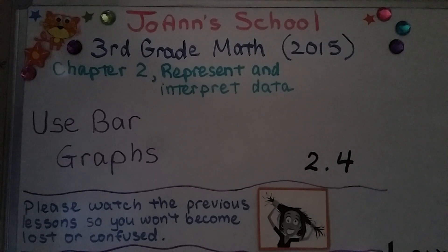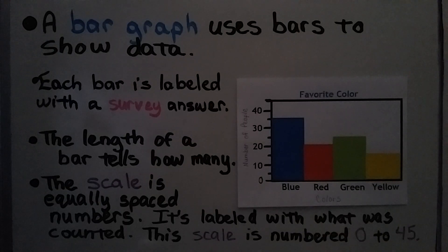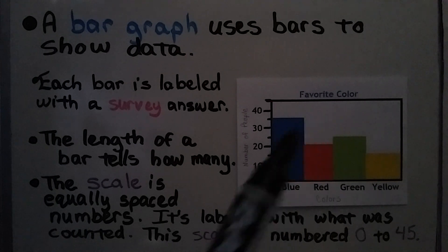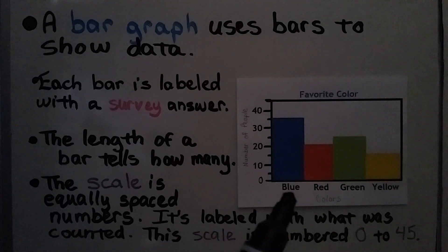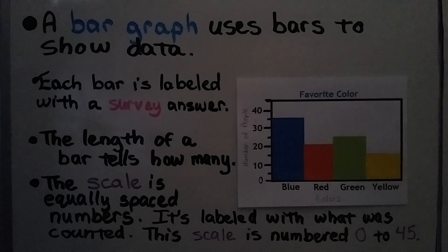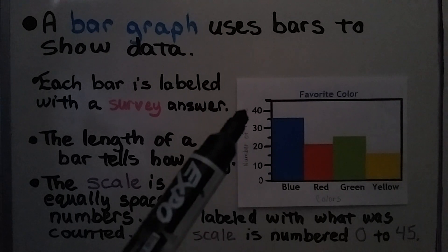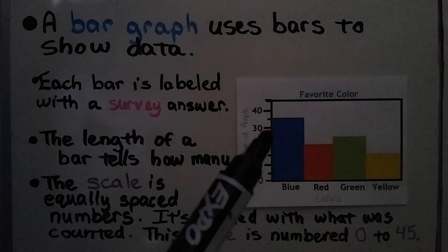In lesson 2.4 we're going to use bar graphs. A bar graph uses bars to show data. Each bar is labeled with a survey answer. The survey question here is 'What is your favorite color?' so the survey answers are blue, red, green, or yellow. The length of the bars tells how many people chose those answers.